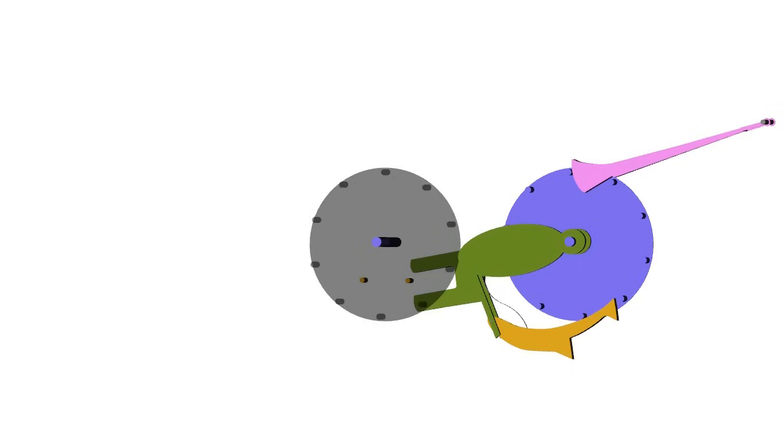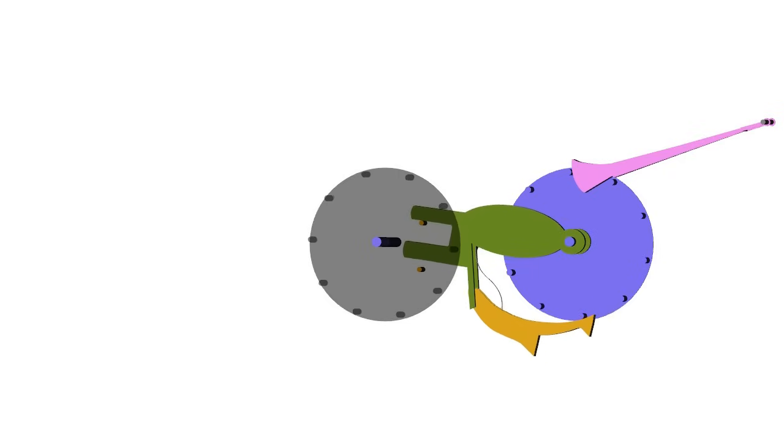As the carry lever rises upwards, the carry pawl also rises and its spring causes it to maintain contact with the pins on the face of the higher order accumulator.